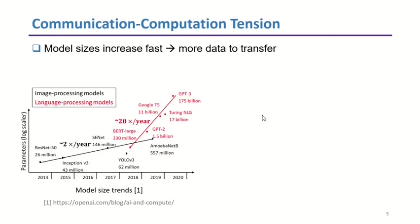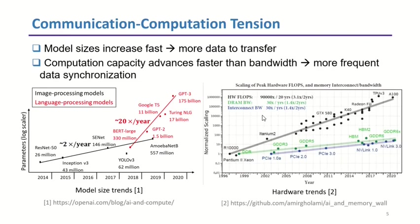First, in recent years, the size of DNN models increases fast, implying that there is more data to be transferred. Second, computation capacity advances faster, meaning gradients will be synchronized more frequently. These points will worsen the tension.